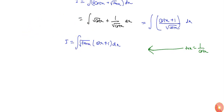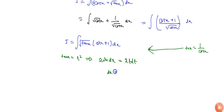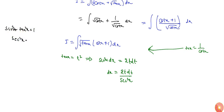Since tan x is under the root, if I substitute tan x equals t², then the derivative gives sec² x dx equals 2t dt, or dx equals 2t dt by sec² x. Now since tan x is t², and we know sec² x minus tan² x equals 1, from here sec² x equals 1 plus tan² x. With tan x equals t², sec² x will be 1 plus t⁴.